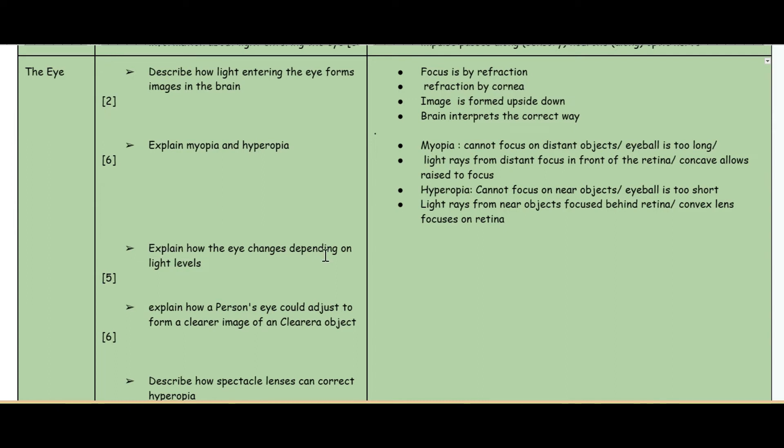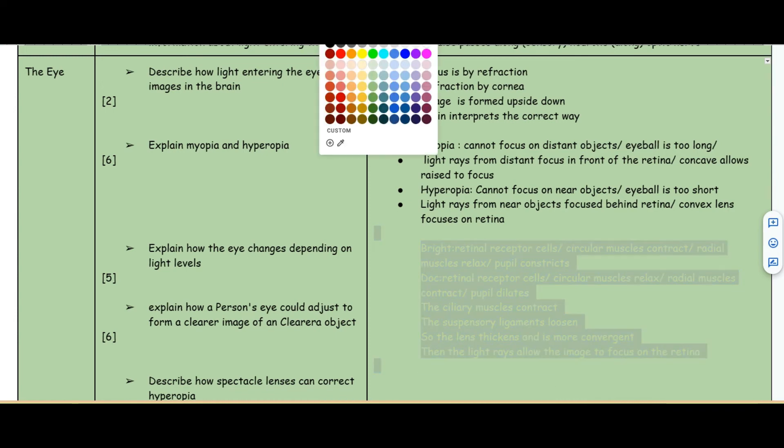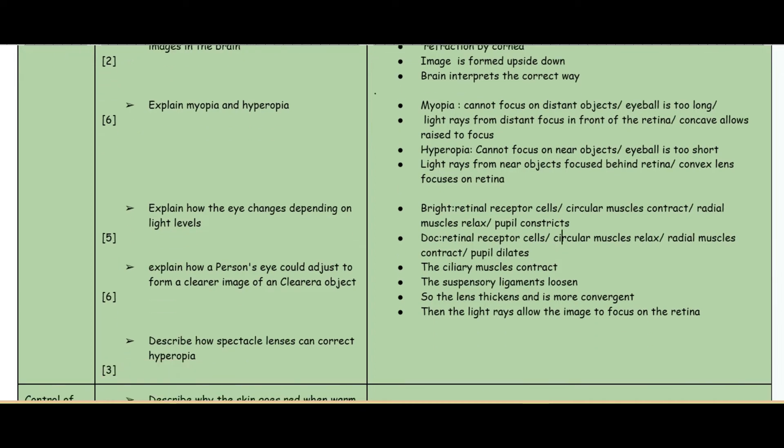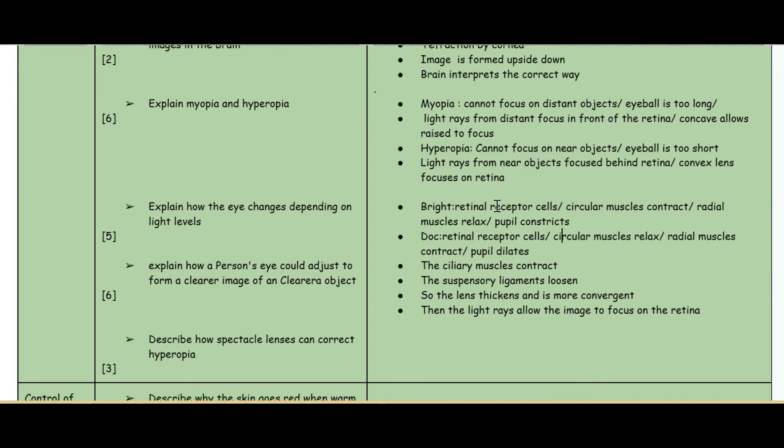The third question: explain how the eye changes depending on the light levels. In bright conditions you've got the retinal receptor cells - the circular muscles contract and the radial muscles relax, which means the pupil gets smaller, it constricts to limit the amount of light going in your eye. When it's dark, the circular muscles relax, the radial muscles contract, the pupil dilates and gets bigger so you can see.